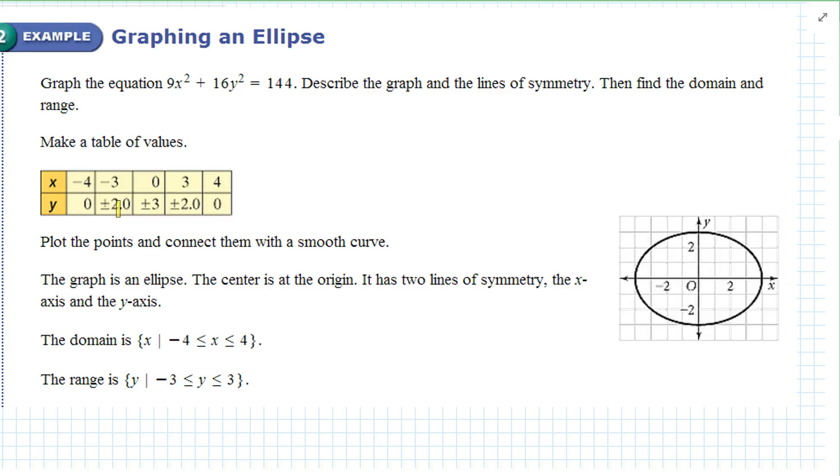So you plot all the points and here's what you find. The graph is an ellipse. The center is at the origin. It has two lines of symmetry, the x-axis and the y-axis. The domain would be all real numbers between negative four and four. And the range is all real numbers between negative three and three. So right now we're just plotting points and then graphing it. You notice how this one makes an ellipse.